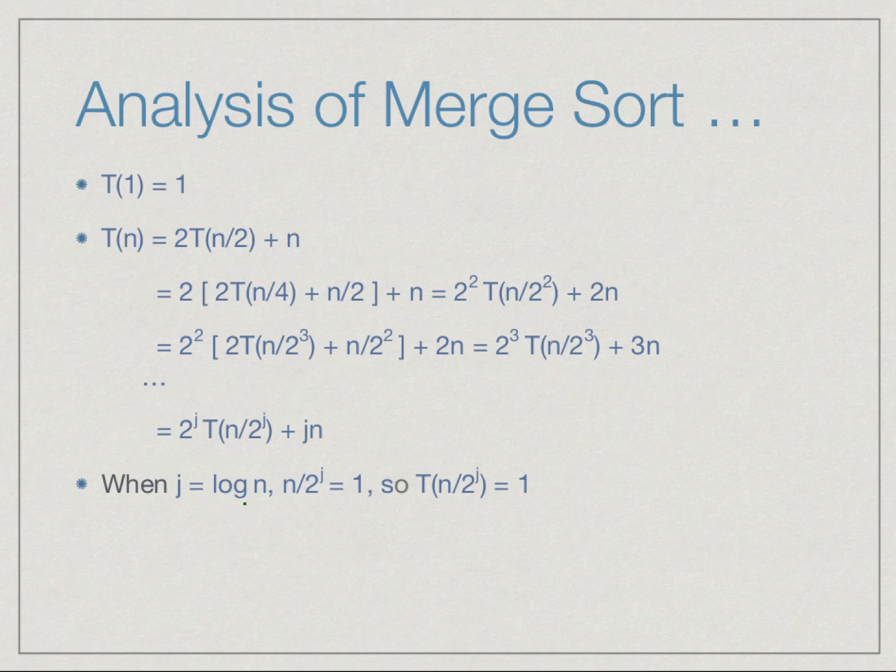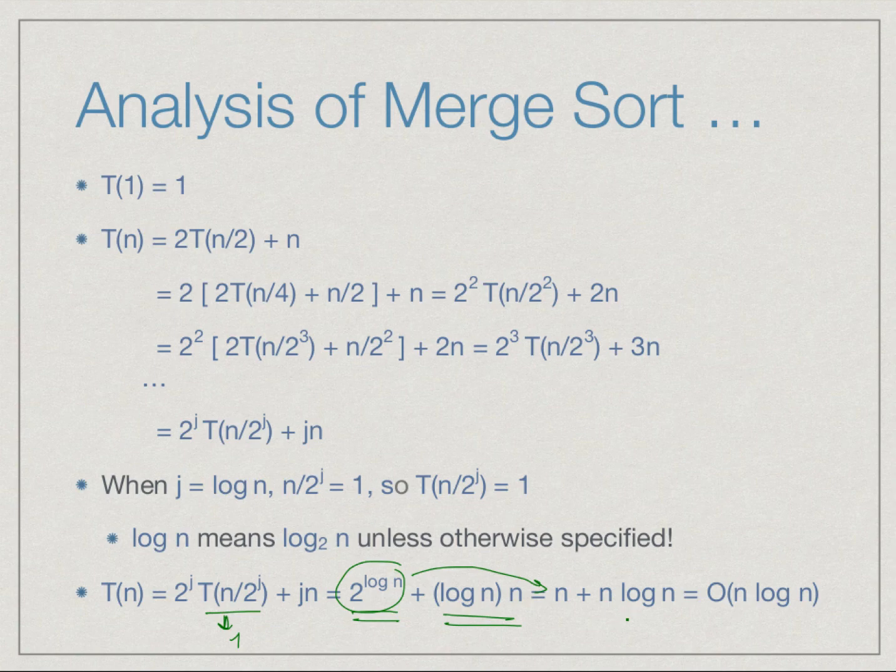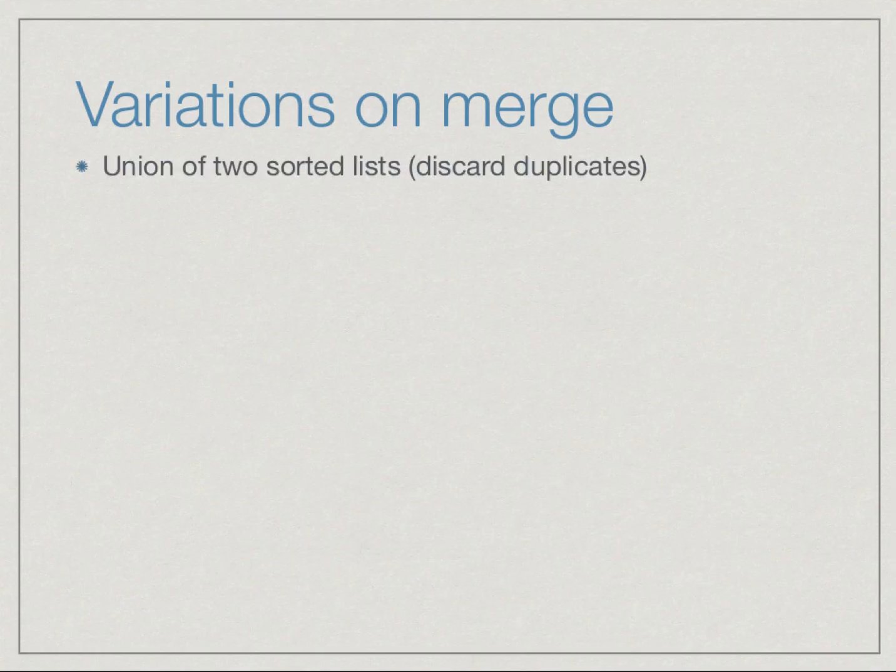When j is log of n, then n/2 to the j will be 1, and so T(n/2 to the j) will also be 1. So after log n steps, this expression simplifies to 2 to the log n plus log n times n. And 2 to the log n by definition is just n. So we have n log n. And by our rule that we keep the higher term when we do big O, n log n is bigger than n, so we get a final value of O(n log n) for merge sort.